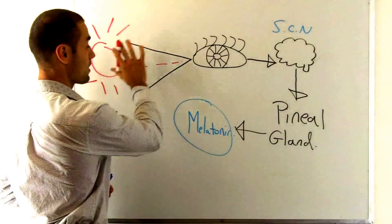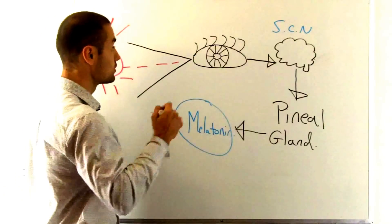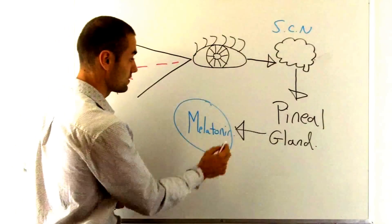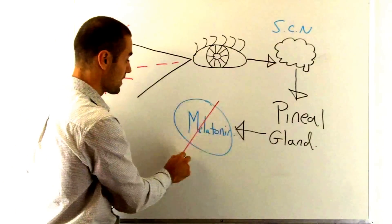This action with the sun throughout the day obviously stops the signal to your suprachiasmatic nucleus and to the pineal gland not to make melatonin.